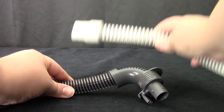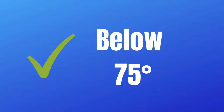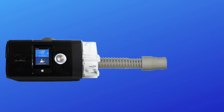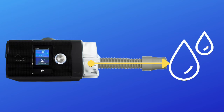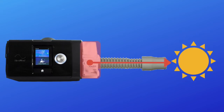Depending on what CPAP unit you have, you may or may not have an option for heated tubing. If you do, heated tubing is a great option for those whose room temperature often falls below 75 degrees Fahrenheit. This is because the heated vapor from your water chamber can become liquid water if it gets too cool. To counteract this, heated tubing keeps the vapor warm all the way from your CPAP to you.